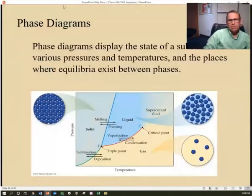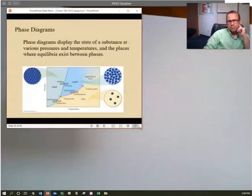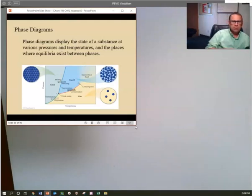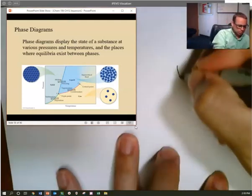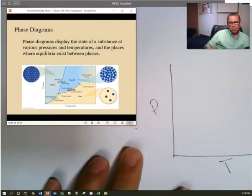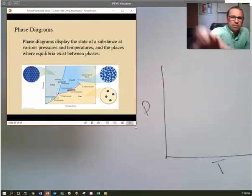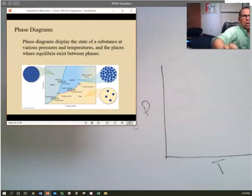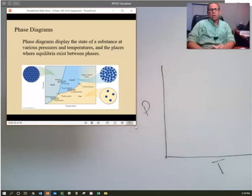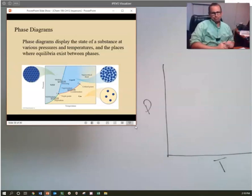Let's look at these phase diagrams. In a phase diagram, essentially it's a plot between pressure and temperature. As we know, you can take a system and change the pressure and temperature of that system.